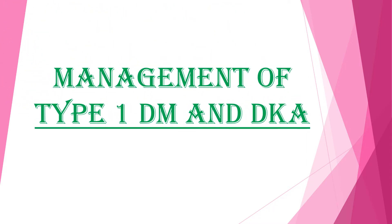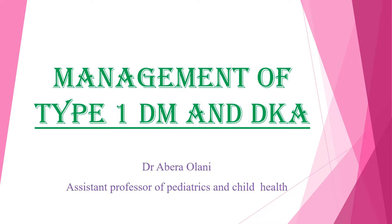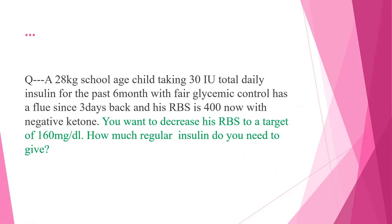Hello. In this lesson I will discuss about management of type 1 DM and DKA. To start with a quiz: a 28 kg school-aged child taking 13 international units total daily insulin for the past 6 months, with fair glycemic control, has had the flu since 3 days back, and his random blood sugar is 400 now with negative ketones. You want to decrease his random blood sugar to a target of 160 mg/dL — how much regular insulin do you need to give, just as a correction dose?